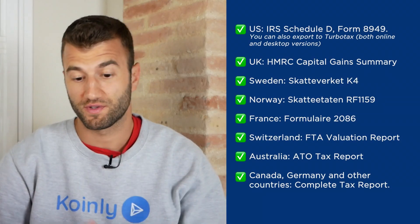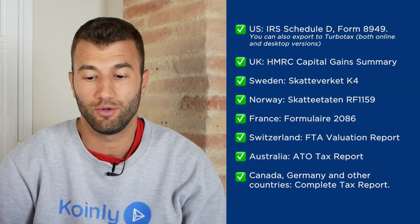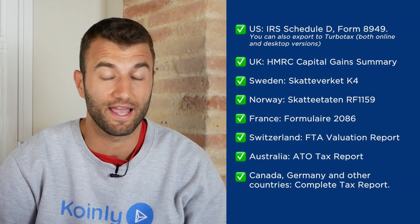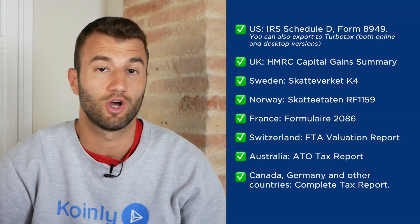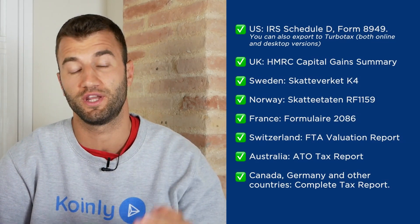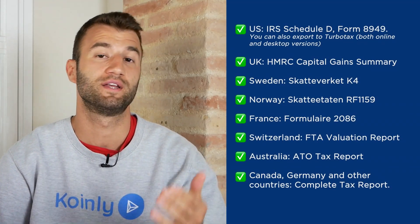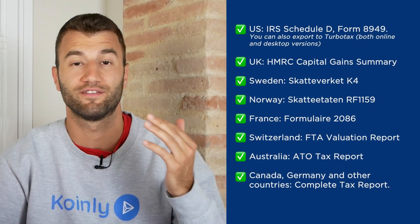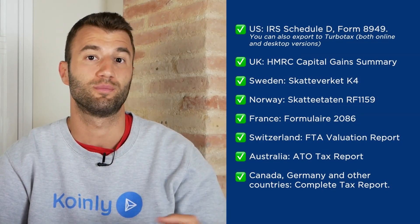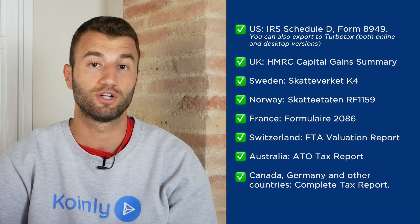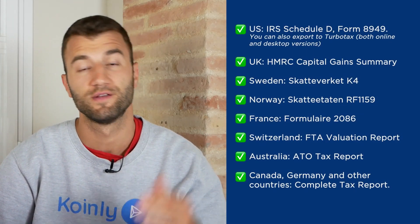Some of these reports include, for the US, the IRS Schedule D Form 8949 — you can export both online and desktop versions. We have reports for the UK, Sweden, Norway, France, Switzerland, Australia, Canada, Germany, and other countries. We also have the complete tax report, which is a document you can print off and give directly to an accountant so they can combine it with your other documentation to submit. Alternatively, you can invite them to Coinly to set up their account and work with us directly.